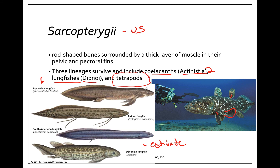The last group of Sarcopterygii is the tetrapods, which includes the amphibians, reptiles, birds, and mammals.